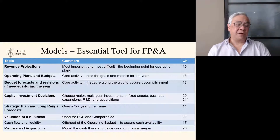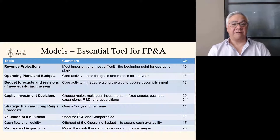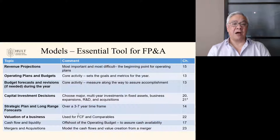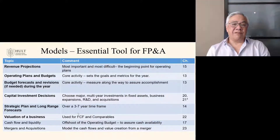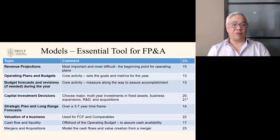We won't touch much on the final two — I put them here for completeness: cash flow and liquidity, and M&A. A large part of a company's business is making sure cash is adequate, which is usually conducted in the Treasury Department, but they rely on other departments for input. FP&A will support that role in cash flow projections for Treasury. In M&A, we won't cover the entire process such as screening of potential targets, due diligence, or the integration plan and rollout.